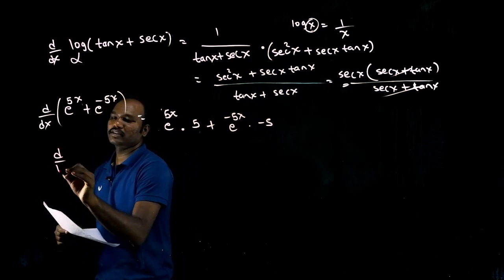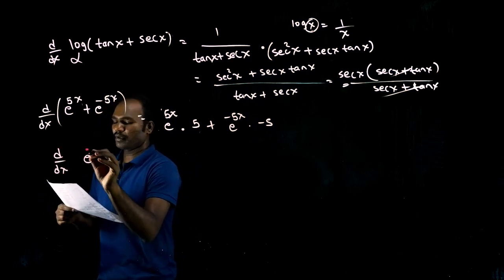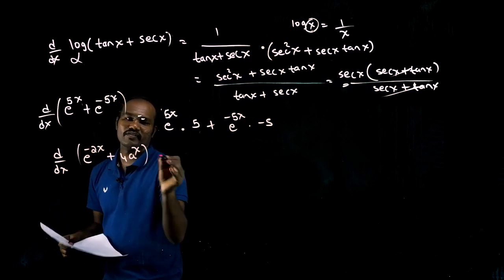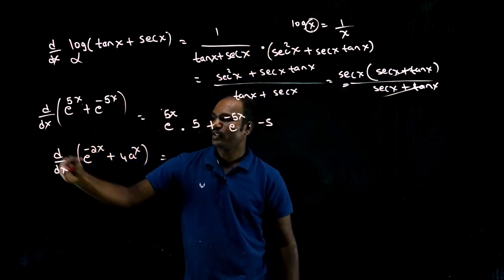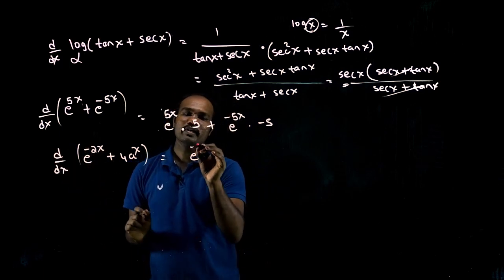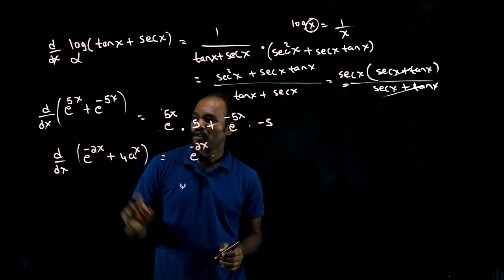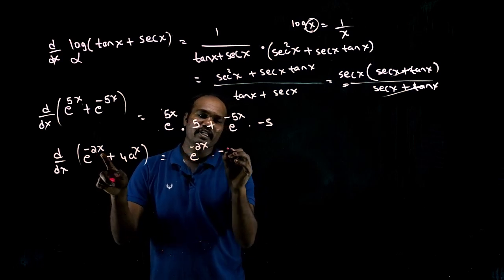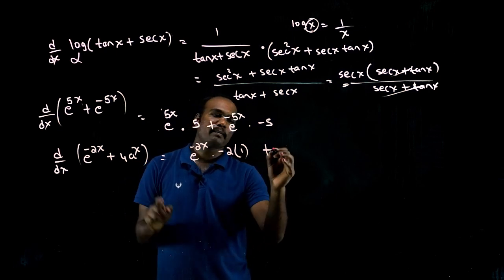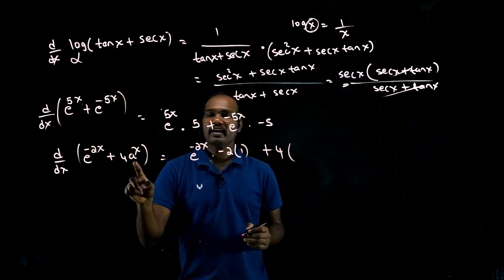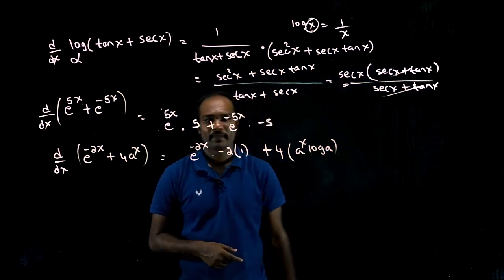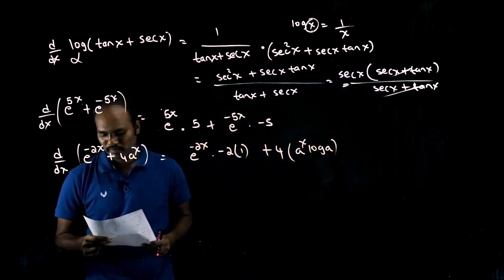d/dx of e^(-2x) + 4a^x. e^x differentiation is e^x only, so e^(-2x) times minus 2x differentiation is minus 2. Plus 4 times a^x differentiation is a^x log a directly from the formula.